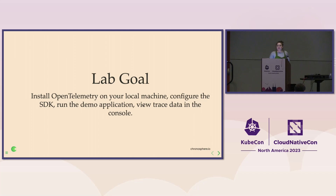If you joined us a little bit later, you need Python 3 and then grab the GitLab repo with the sample application. What we want to do for automatically instrumenting is get OTEL set up on your machine, configure the SDK, run our demo app, and view trace data in the console. We're going to start building these concepts up one by one.